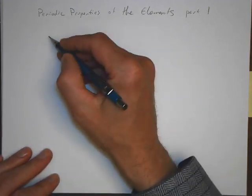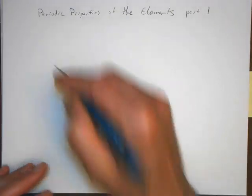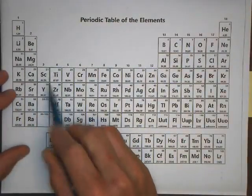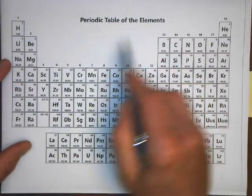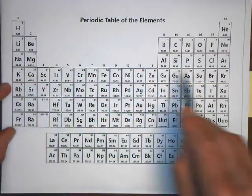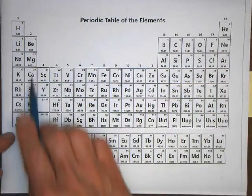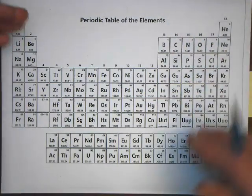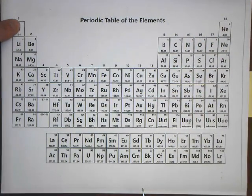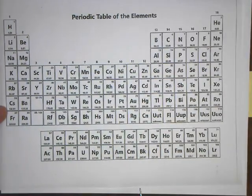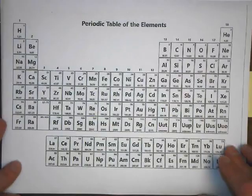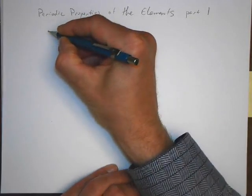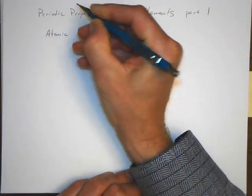The first property — a periodic property of the element. When we talk about periodic properties, what we're talking about is how does some property of the elements vary going across the periodic table, or down the periodic table, or up the periodic table. You could probably guess, for example, that the atoms up here are smaller than the atoms down here. So the first property we're going to look at is atomic radius.